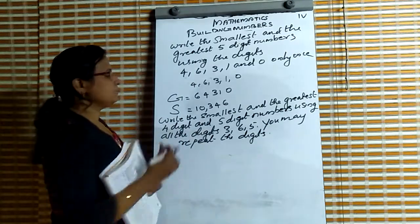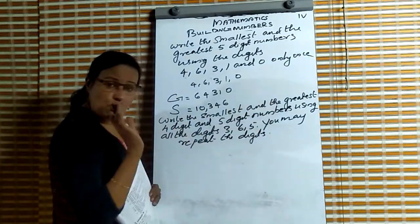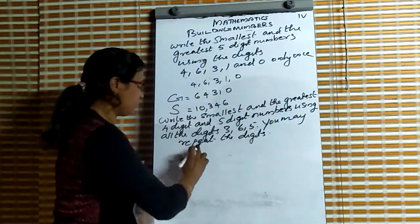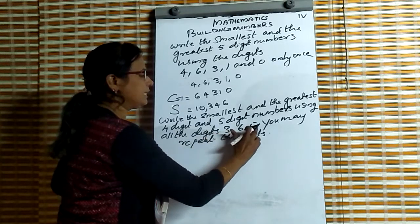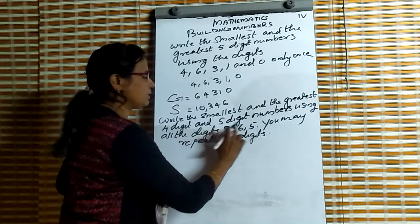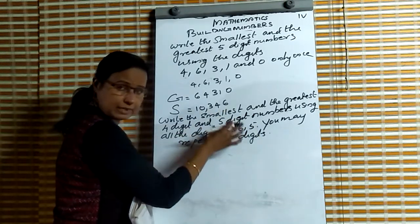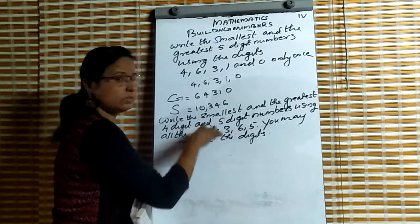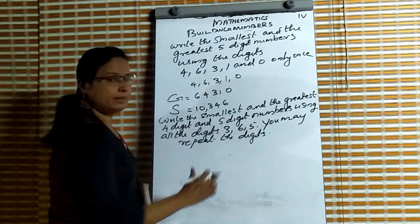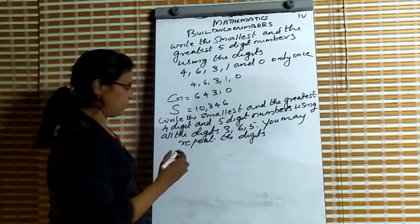Listen. Write the smallest and the greatest 4-digit and 5-digit numbers. But we are given only 3 digits: 3, 6, and 5. So using these 3 numbers, make the largest and smallest 4-digit and 5-digit numbers.